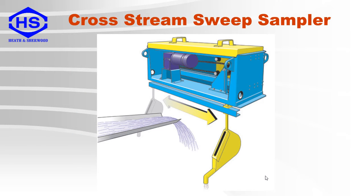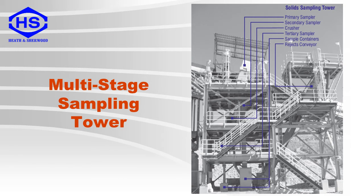Here is another example of a cross-stream sweep sampler for solids. It is an electrically driven cutter which moves across the discharge flow from a conveyor belt. This is an example of a complete composite sampling tower. Increments are taken via an arm sampler, which drop down to a secondary sampler. Increments from the secondary sampler go through a crusher for particle size reduction, before going to a tertiary sampler, and then on to sample containers. The rejects go to a high-inclination conveyor belt and are put back on the process belt.